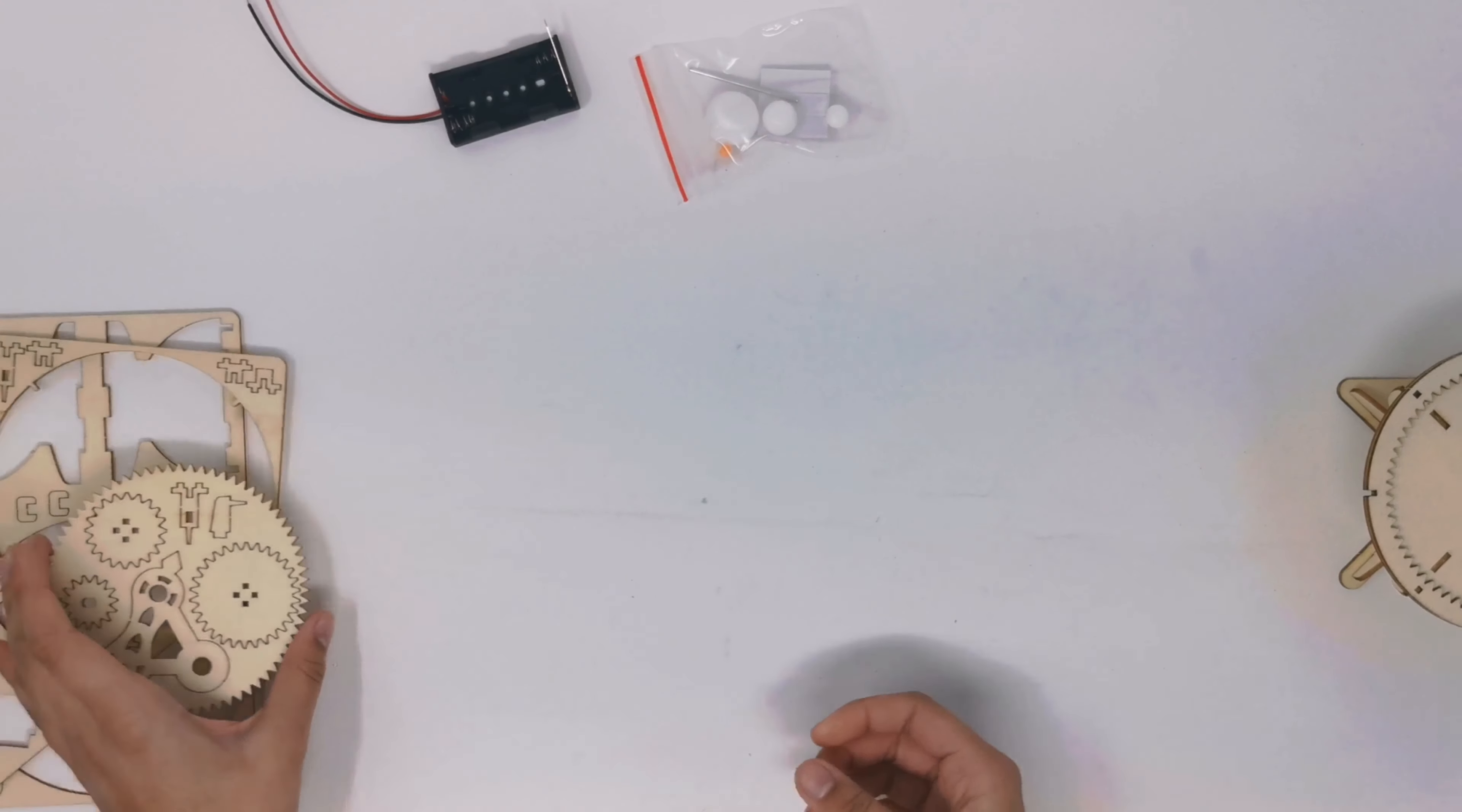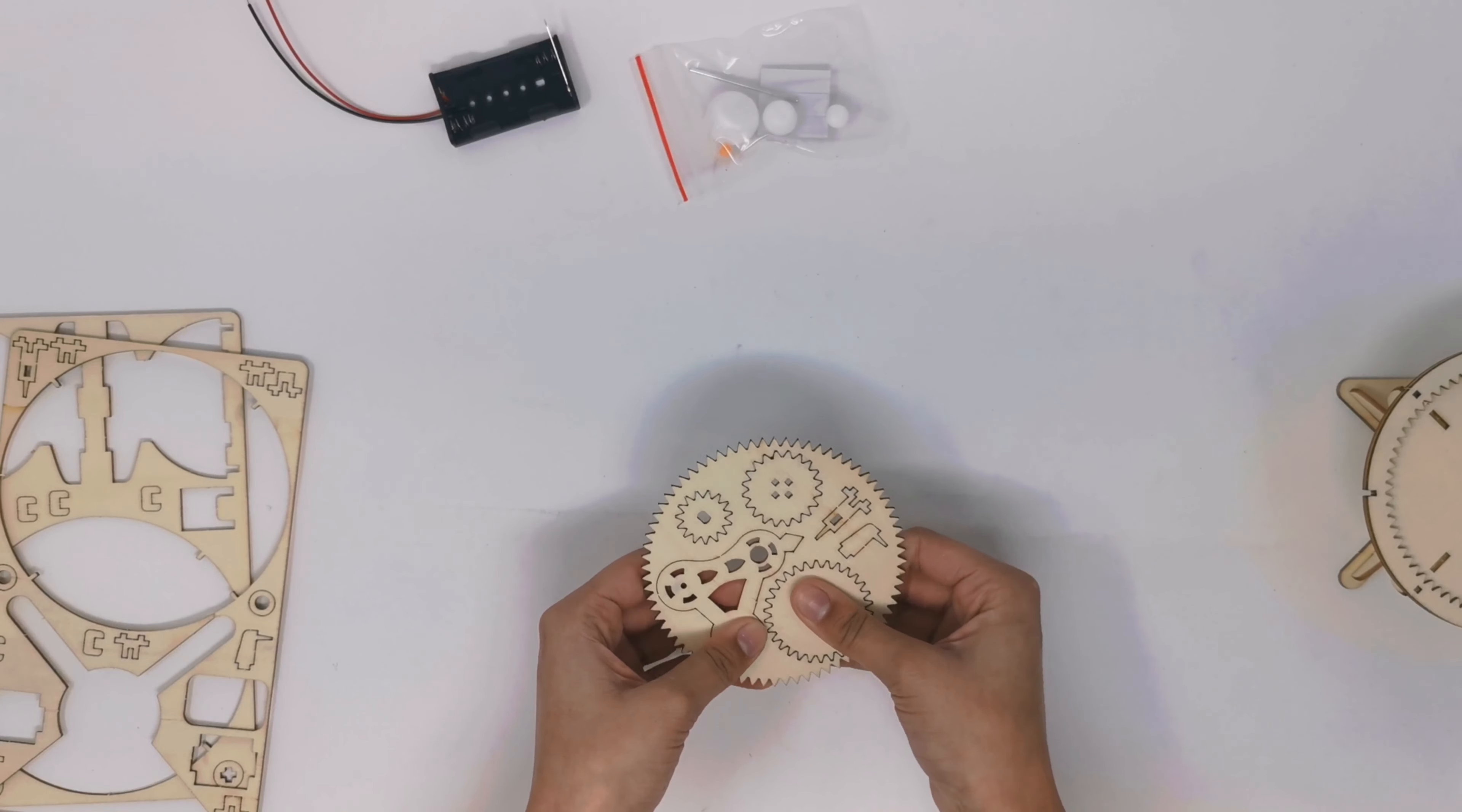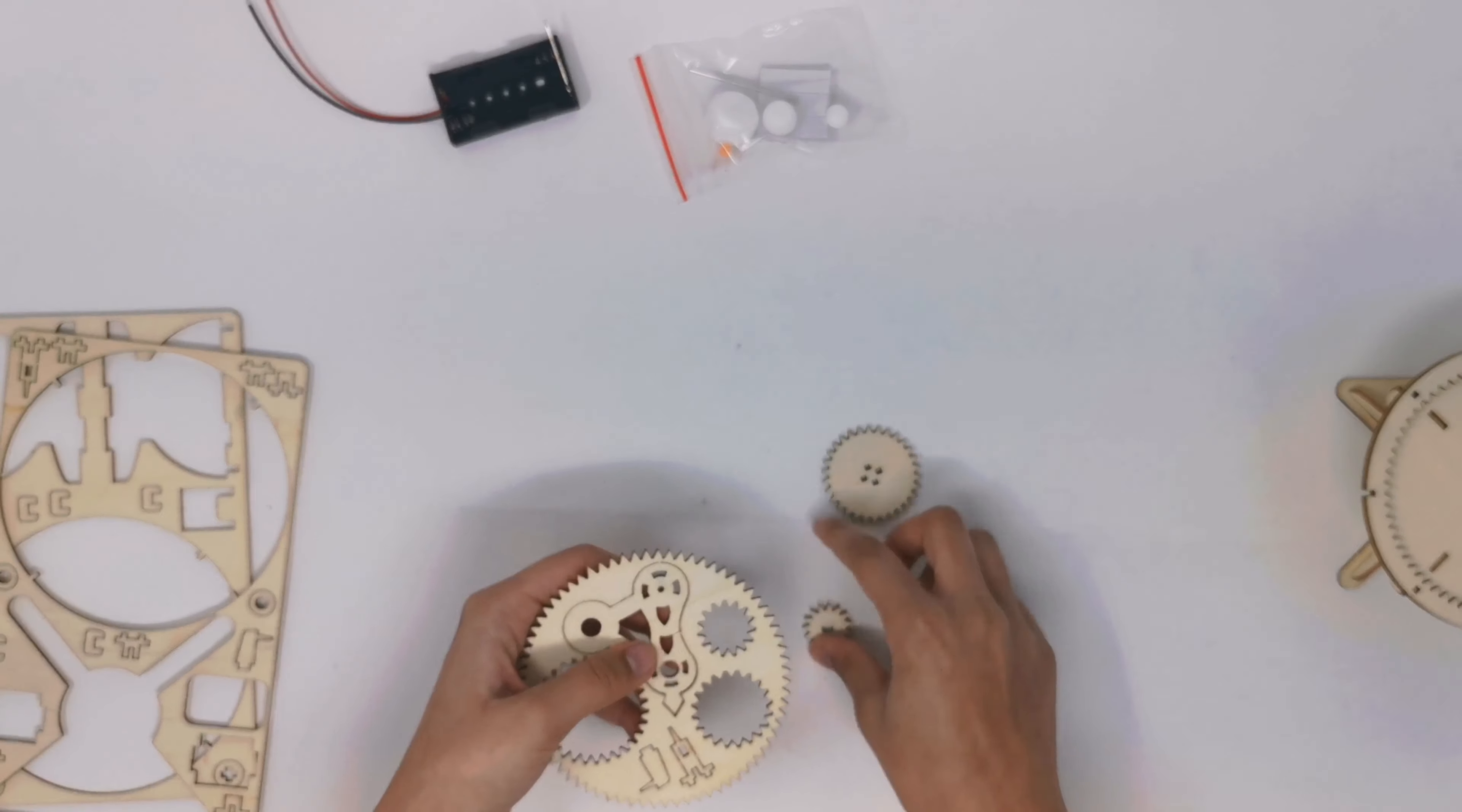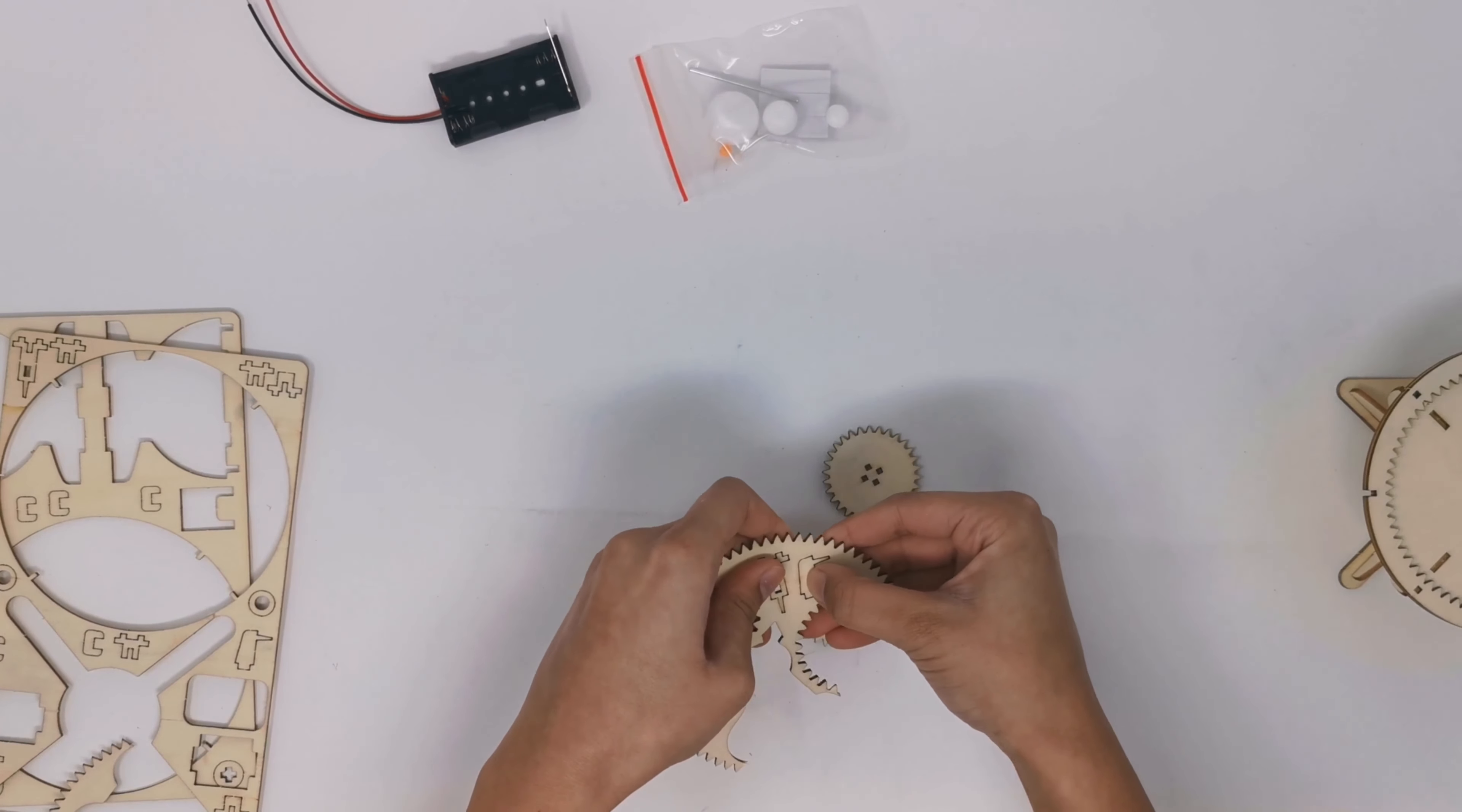Now we will put this to the side and grab our gears. So for the solar system kit, you will have three gears and also this other larger piece.